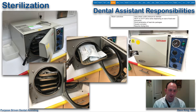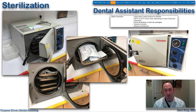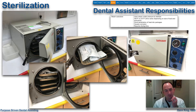We test the autoclave weekly using a spore strip. Basically, we place a strip containing bacterial capsules and run it through a cycle. That strip is then shipped to a lab, which will attempt to culture and grow the bacteria. If it grows, our machine is not working correctly and we get an alert immediately. If it doesn't grow, we're good. We do that every week. If we get an actual positive, it requires immediate action.